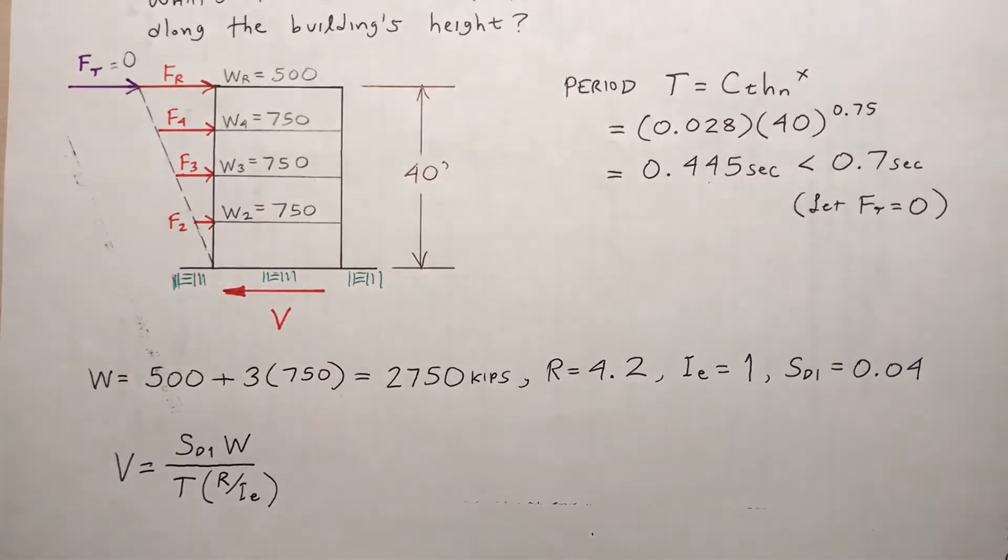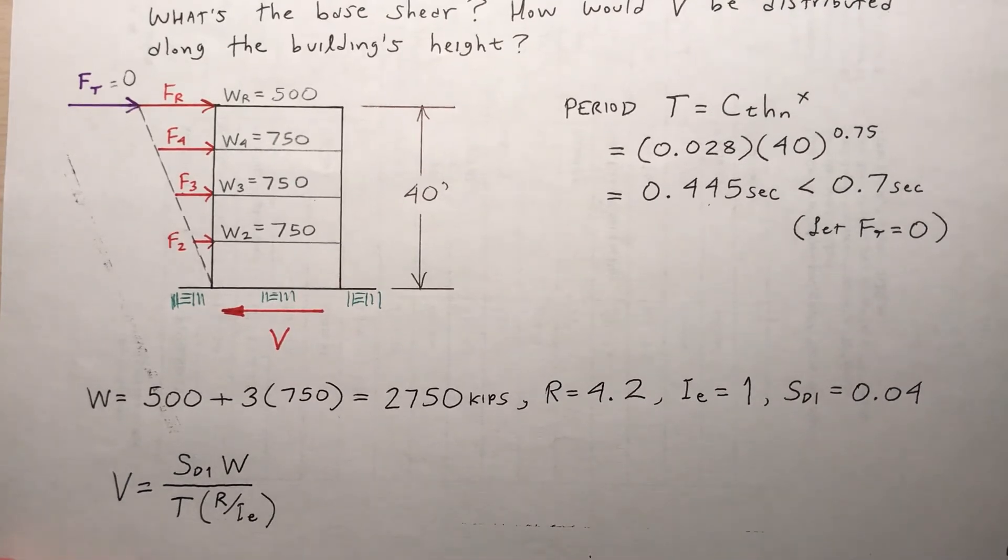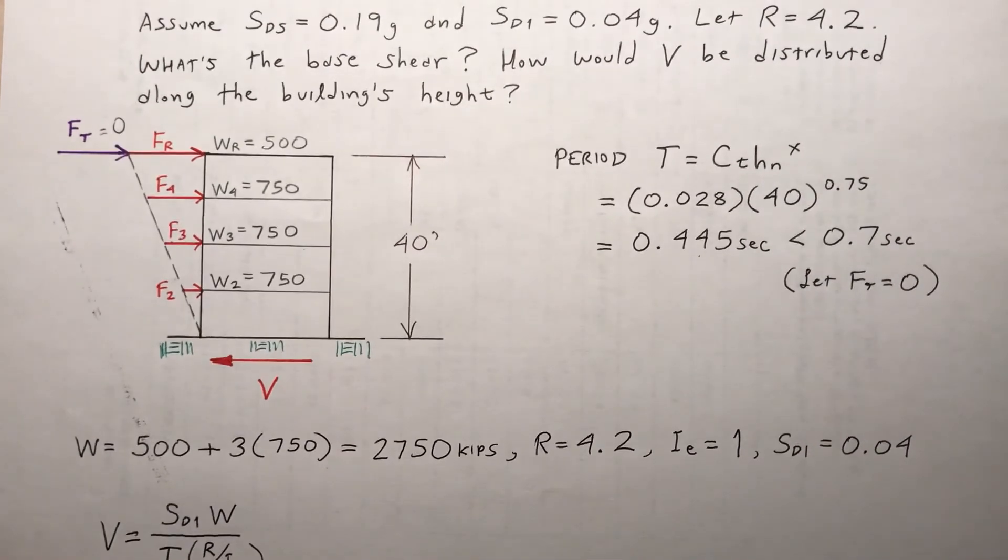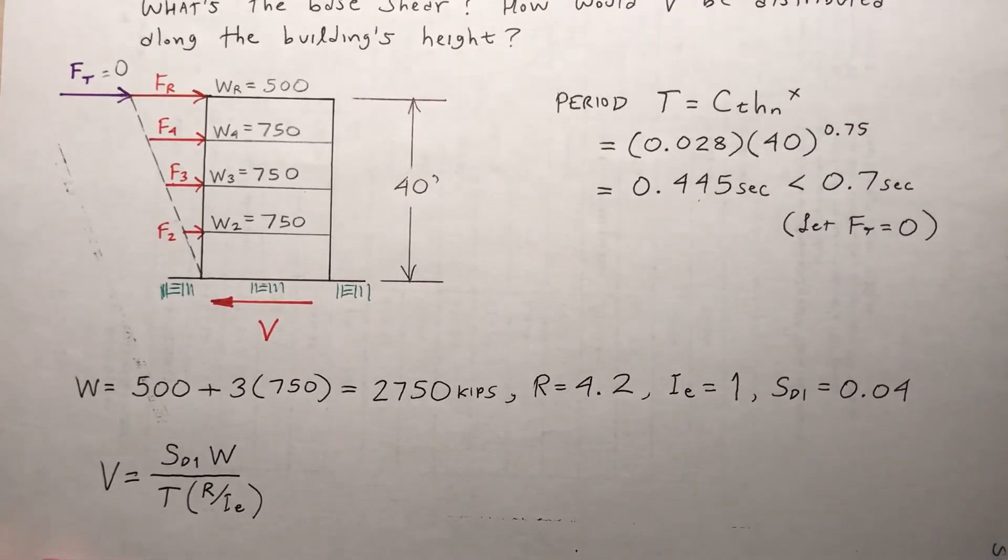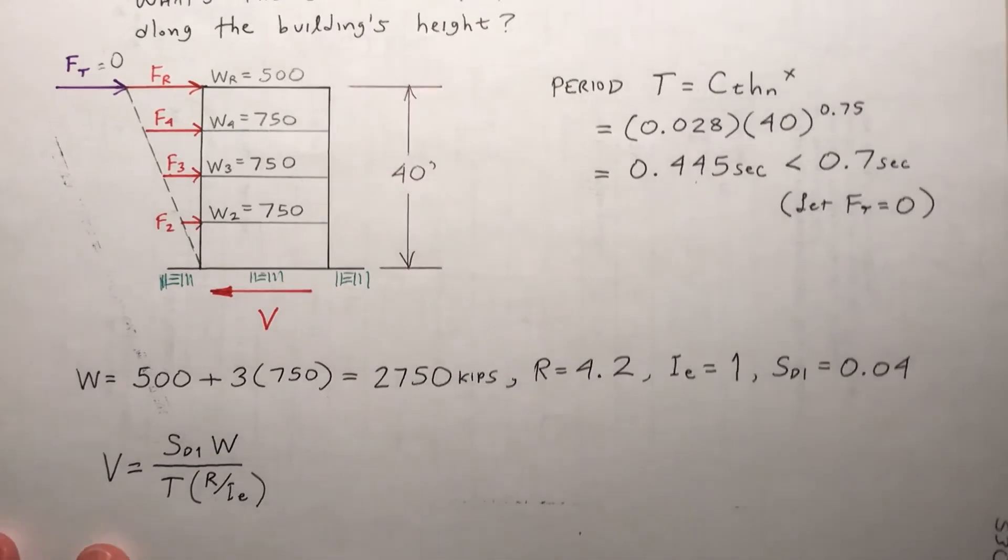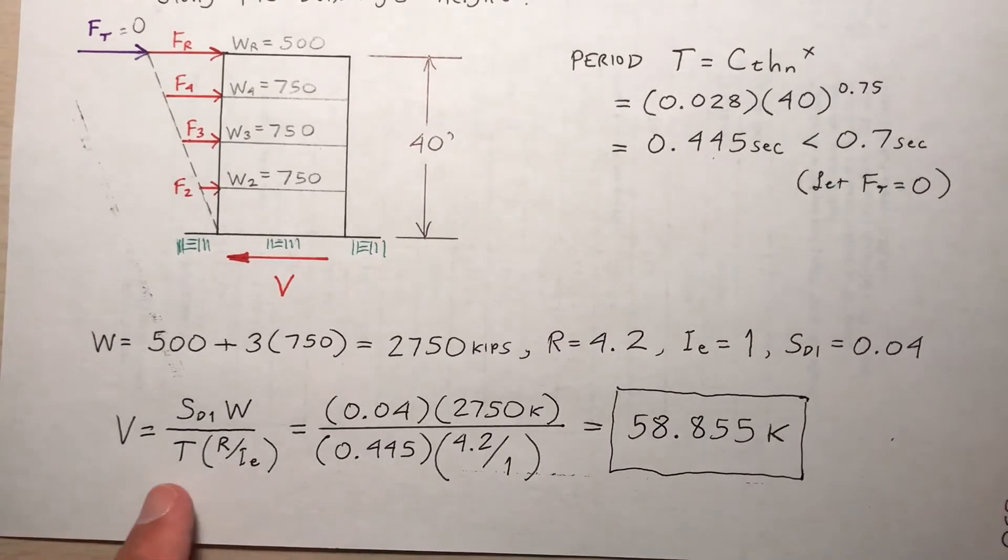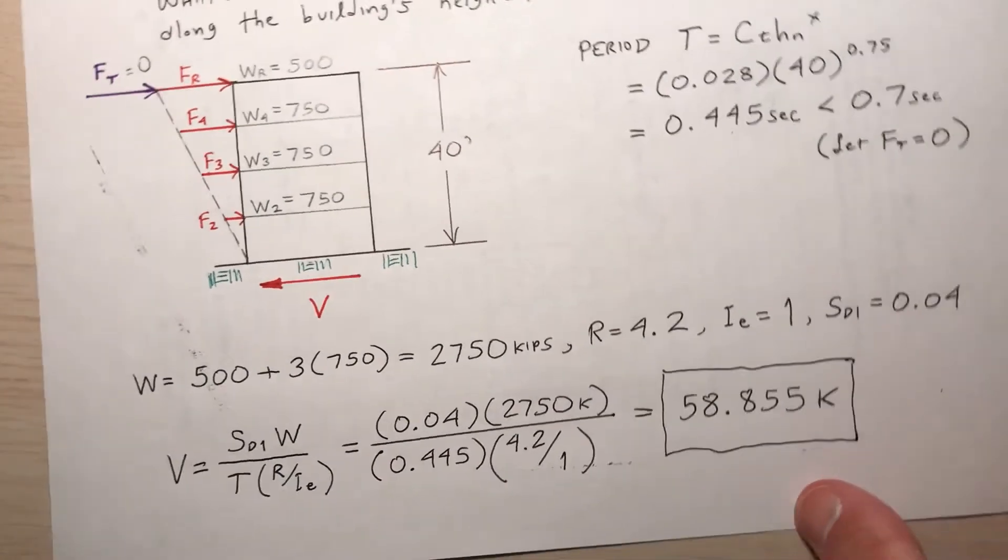So I calculate the total weight of the building. The total weight, 500, that's the roof, plus three floor stems, 750 kips each, 2,750 kips. R was given as 4.2. Importance factor one, general use. And then S_D1, I believe I gave that as 0.04. So I have all the information I need to stick into the formula for base shear. So let me stick all those numbers in there to calculate this base shear. Sticking all the numbers into the formula for base shear, I stick all the numbers in there and I get 58.855 kips as my base shear.